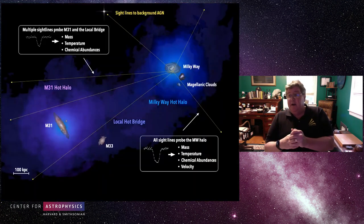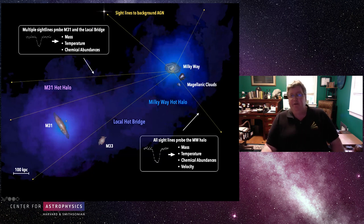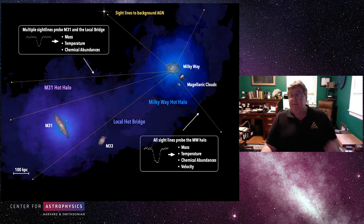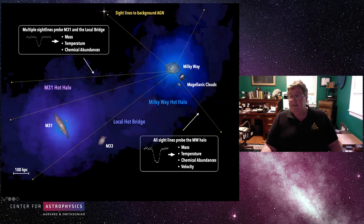All these lines of sight will also go straight through the Milky Way itself and nearby neighbors. We'll get an exquisite measure of the Milky Way halo and the hot halo of M31. Shown are just a few lines of sight toward various sources — we'll be probing the mass, temperature, abundances, and velocity of this gas, determining whether it is moving or not, and for some targets even measuring mass, temperature, and chemical abundances of M31.